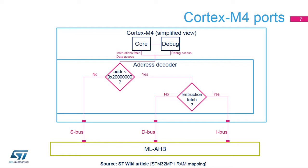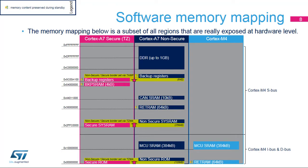For the sake of simplicity, this second address range is not shown in the next slides, but keep in mind that it exists. The diagram maps the various RAM and ROM regions on the different execution contexts that use them in the STM32MPU embedded distribution. It is important to notice that the RET RAM appears twice: once on the Cortex-A7 non-secure side for coprocessor firmware loading, and once on the Cortex-M4 side for coprocessor firmware execution, starting from the 0x00000000 address. This diagram is available on the ST Wiki article STM32MP1 RAM mapping.